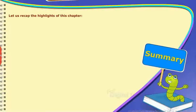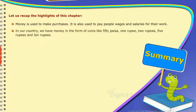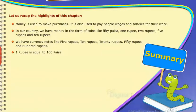Summary: Let us recap the highlights of this chapter. Money is used to make purchases. It is also used to pay people wages and salaries for their work. In our country, we have money in the form of coins like 50 paisa, 1 rupee, 2 rupees, 5 rupees, and 10 rupees. We have currency notes like 5 rupees, 10 rupees, 20 rupees, 50 rupees, and 100 rupees. 1 rupee is equal to 100 paisa.